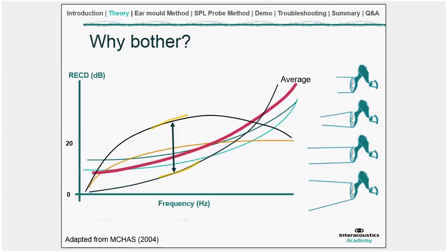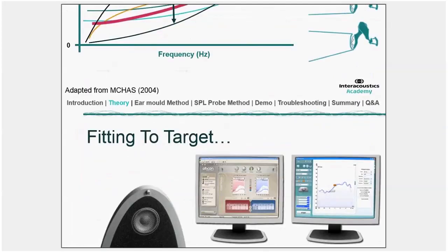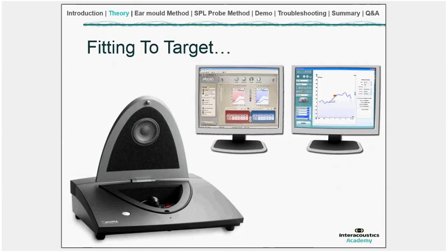RECD measurements are therefore essential, and if you can't obtain one, average data is better than nothing, but individual measurement is needed for an accurate fit. Once the RECD is obtained, the hearing aid fitting process becomes straightforward: place the hearing aid in the coupler inside the test box or on the coupler base, run a traditional real ear aided response, and match target — exactly as you would with a real ear measurement.